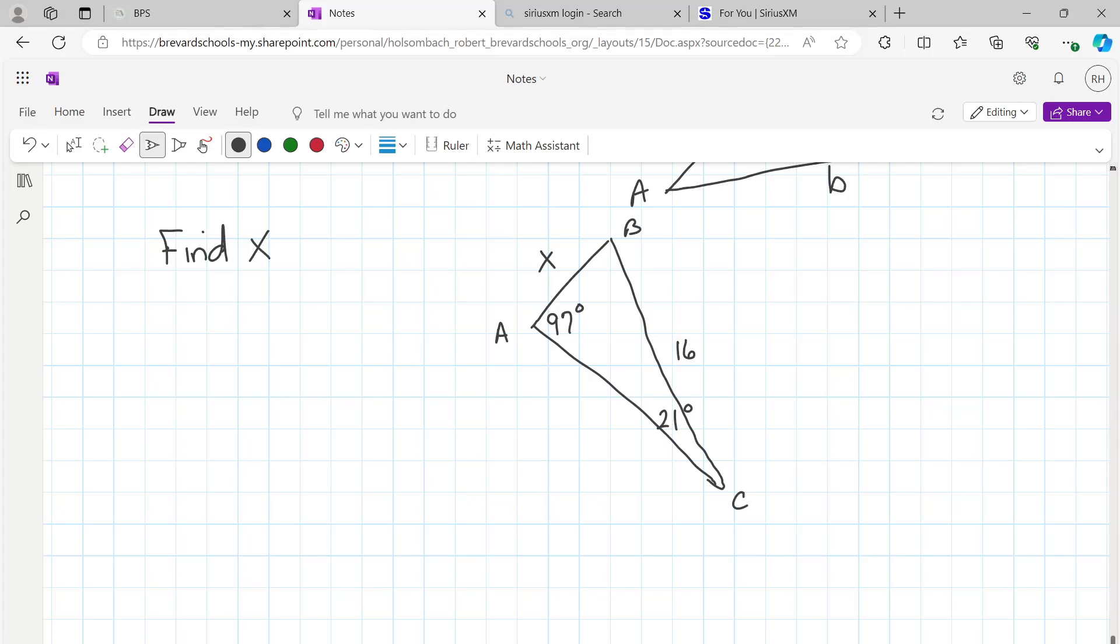So here's how the law of sines works. In this problem right now, we are given an angle and its opposite side, right? And then you're also given another angle, and we're trying to find the length of its opposite side.